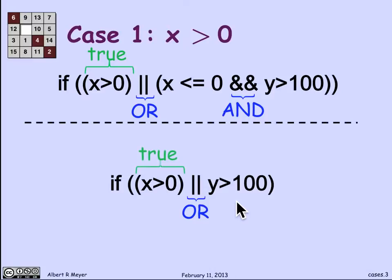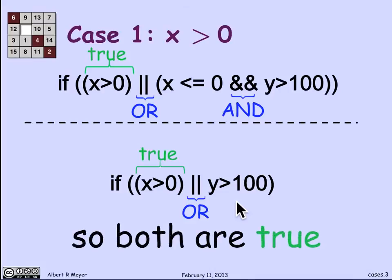Likewise, the second expression starts with x greater than 0 or. So it comes out to be true. So in this case, if x is greater than 0, both conditional expressions will allow the code that follows them to be executed, because they both evaluate to true.